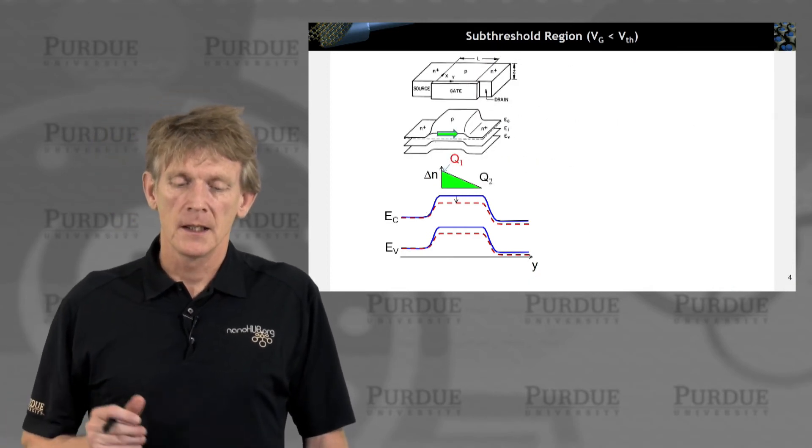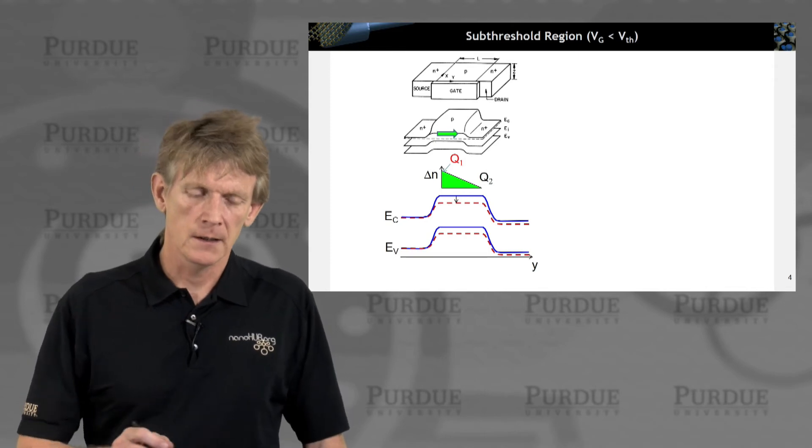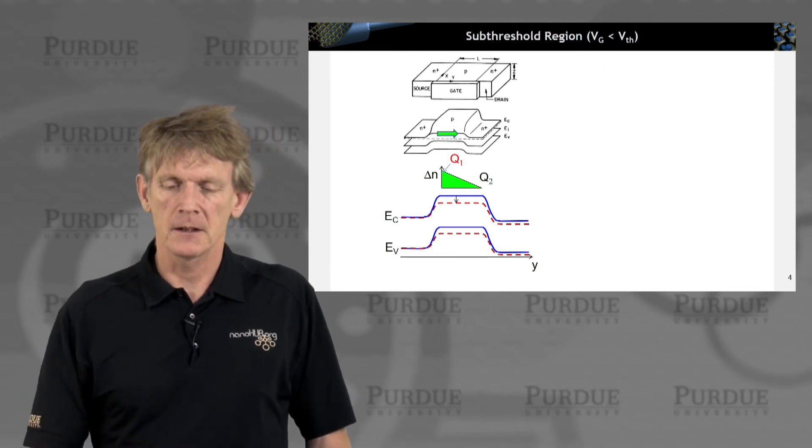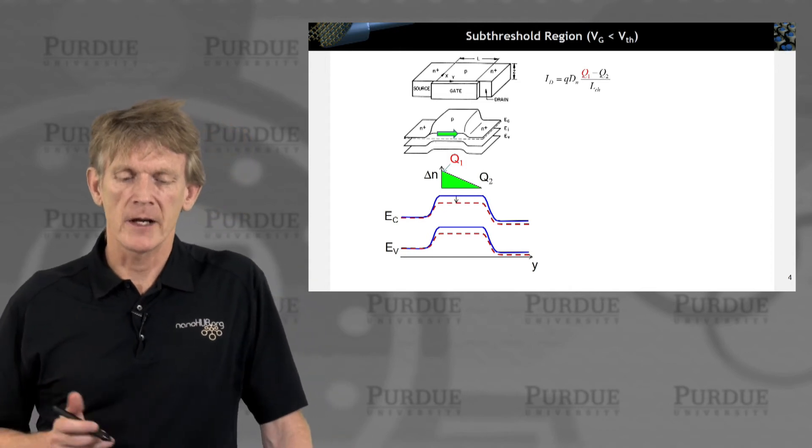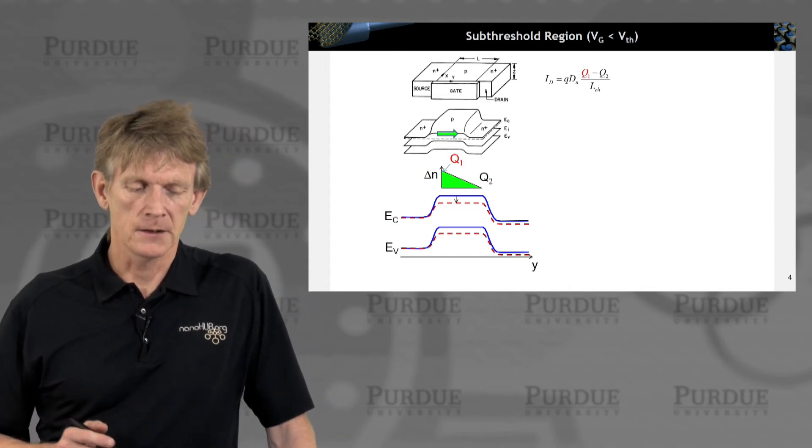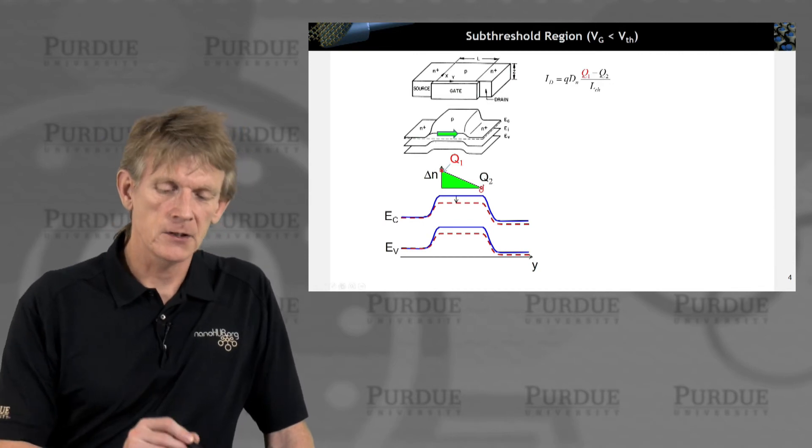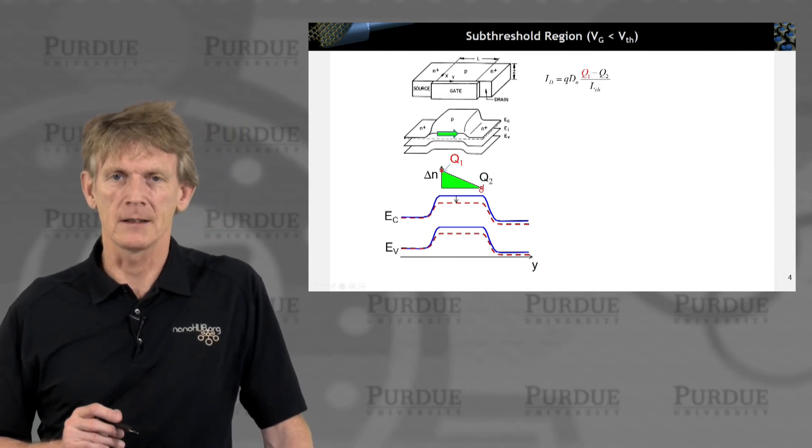So in the sub-threshold region, when we are injecting carriers like a PN diode, what do we expect? Well, the drain current will be the charge at the beginning of the channel and at the end of the channel, divided by some channel length.